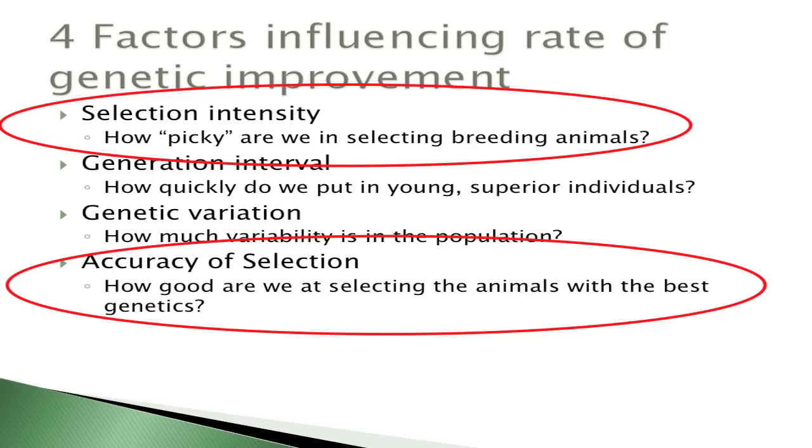There are four factors influencing how fast you can make progress in a next generation and subsequent generations. The first is selection intensity — how picky are you at choosing which animals go into the breeding program? If you're focused on fiber diameter, how selective are you about the genetics or performance of that animal? How much better is it than the rest of the population?